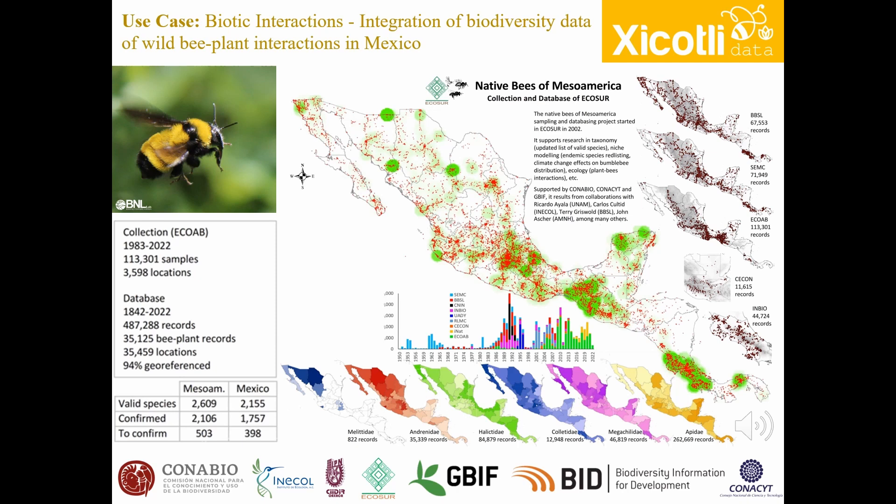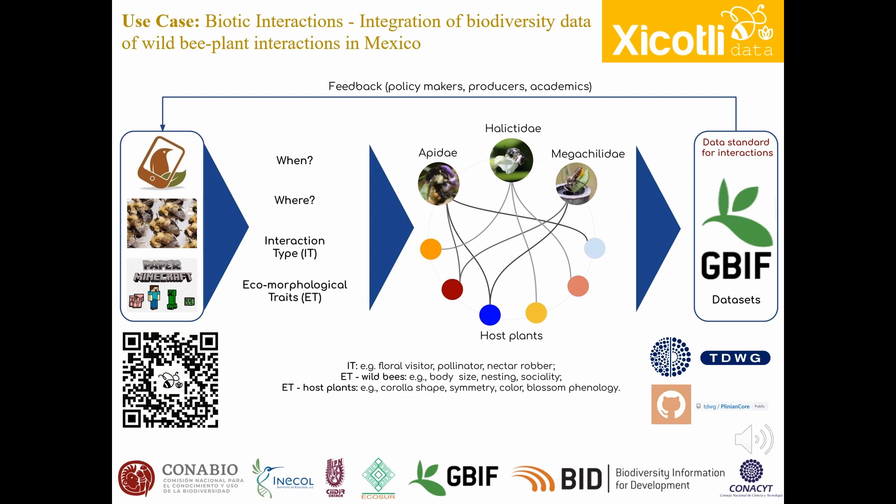The other two sources of information on the bee plant interactions — such as publications and data from citizen science platforms such as iNaturalist — were in the same situation. We spent an important part of the time and resources curating, integrating, and mobilizing the data. In the Chicotli Data project, we focus on integrating information on available biological interactions in iNaturalist, the entomological collection of bees, mainly in the ECOAB collection, and in publications.